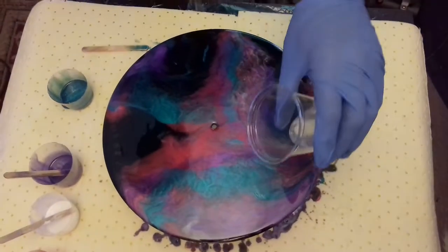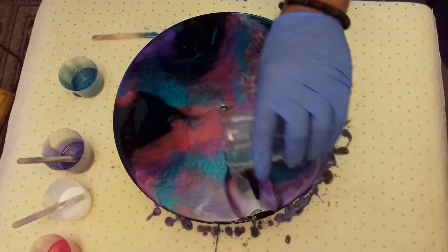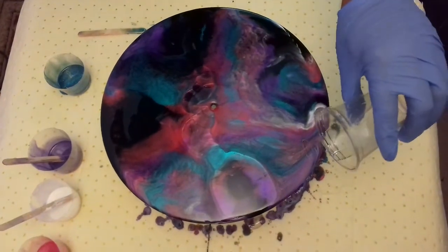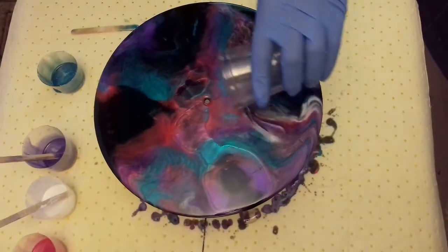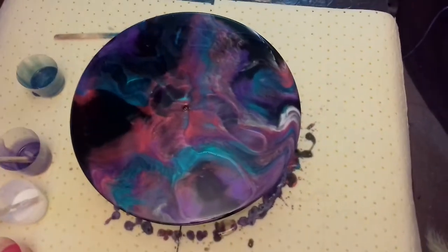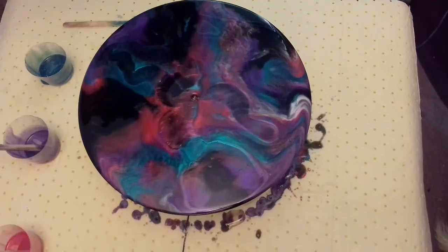What I'm going to do now is add some clear resin, so it will bring the black through again. Then I'll put my color on it. Put some white on that, I think.